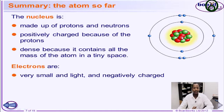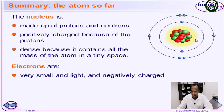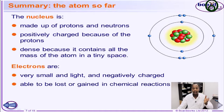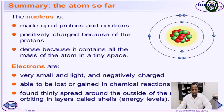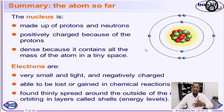The electrons are very small and light, and they are negatively charged. The size of the electron is way smaller compared relatively to the protons and the neutrons. Electrons are able to be lost or gained in a chemical reaction — when two or more elements react together, electrons are either lost or gained, giving rise to chemical reactivity. Electrons are found thinly spread around the orbit and revolve around the shell in various energy levels. They are found outside the nucleus of the atom.